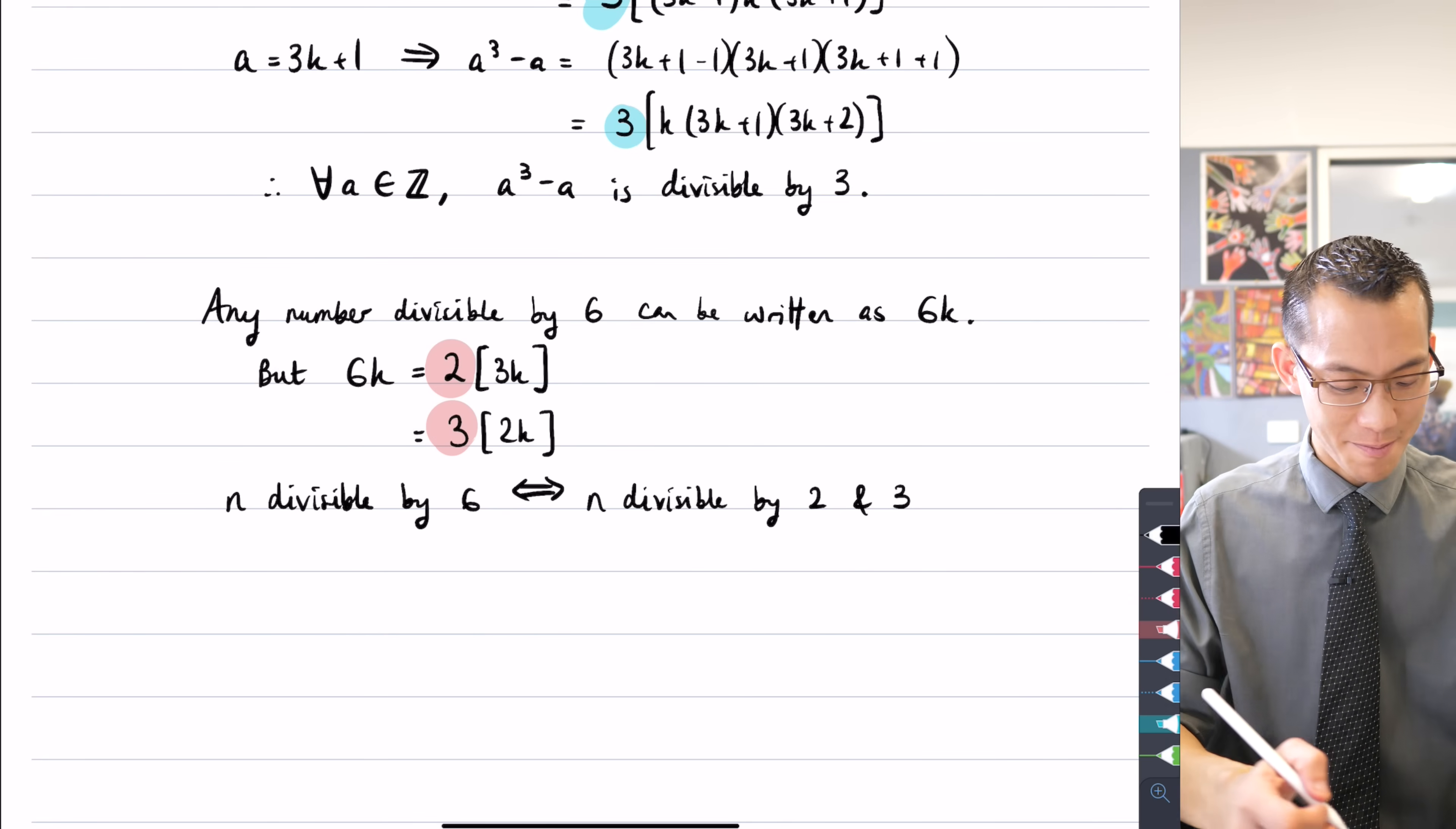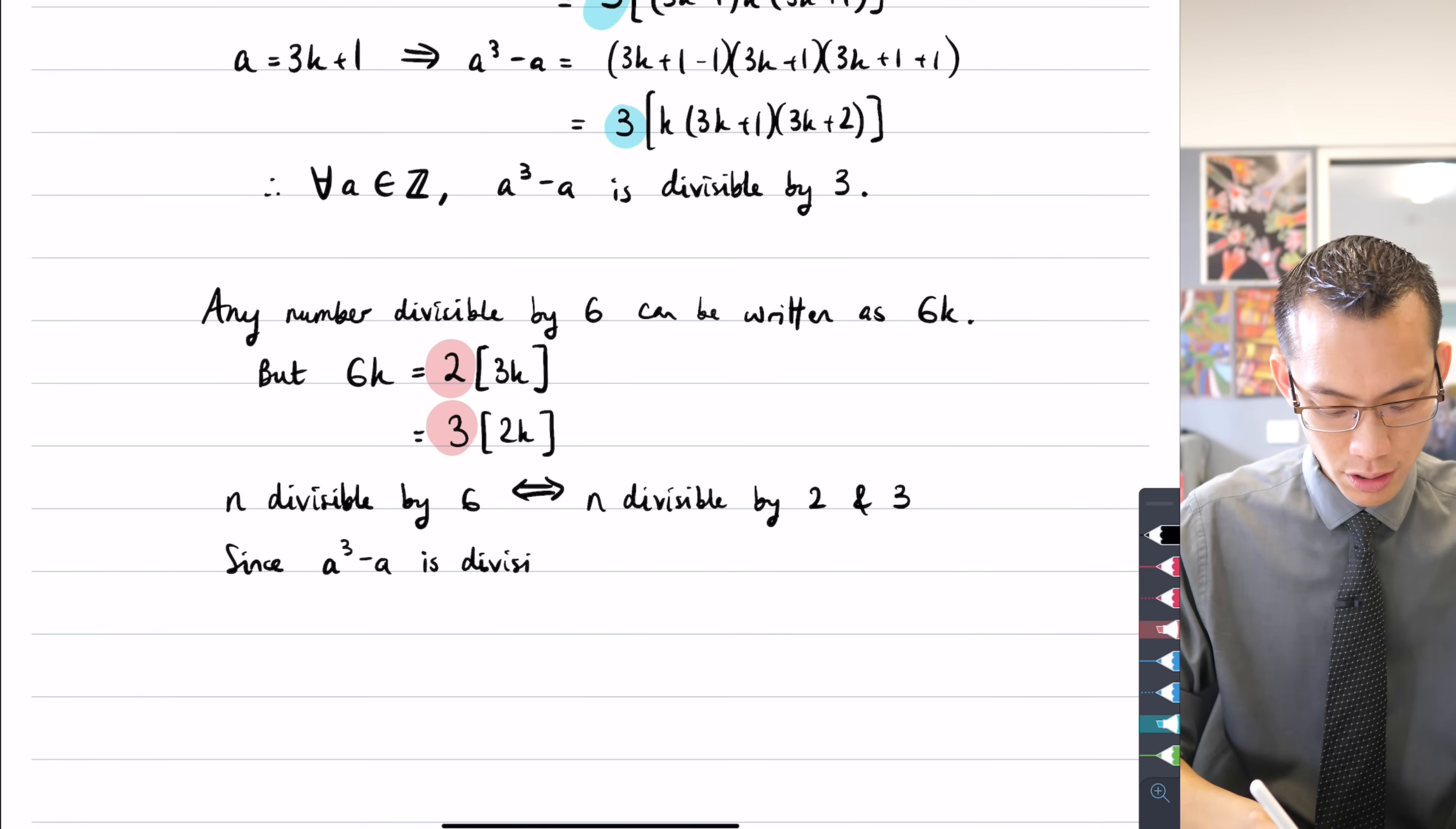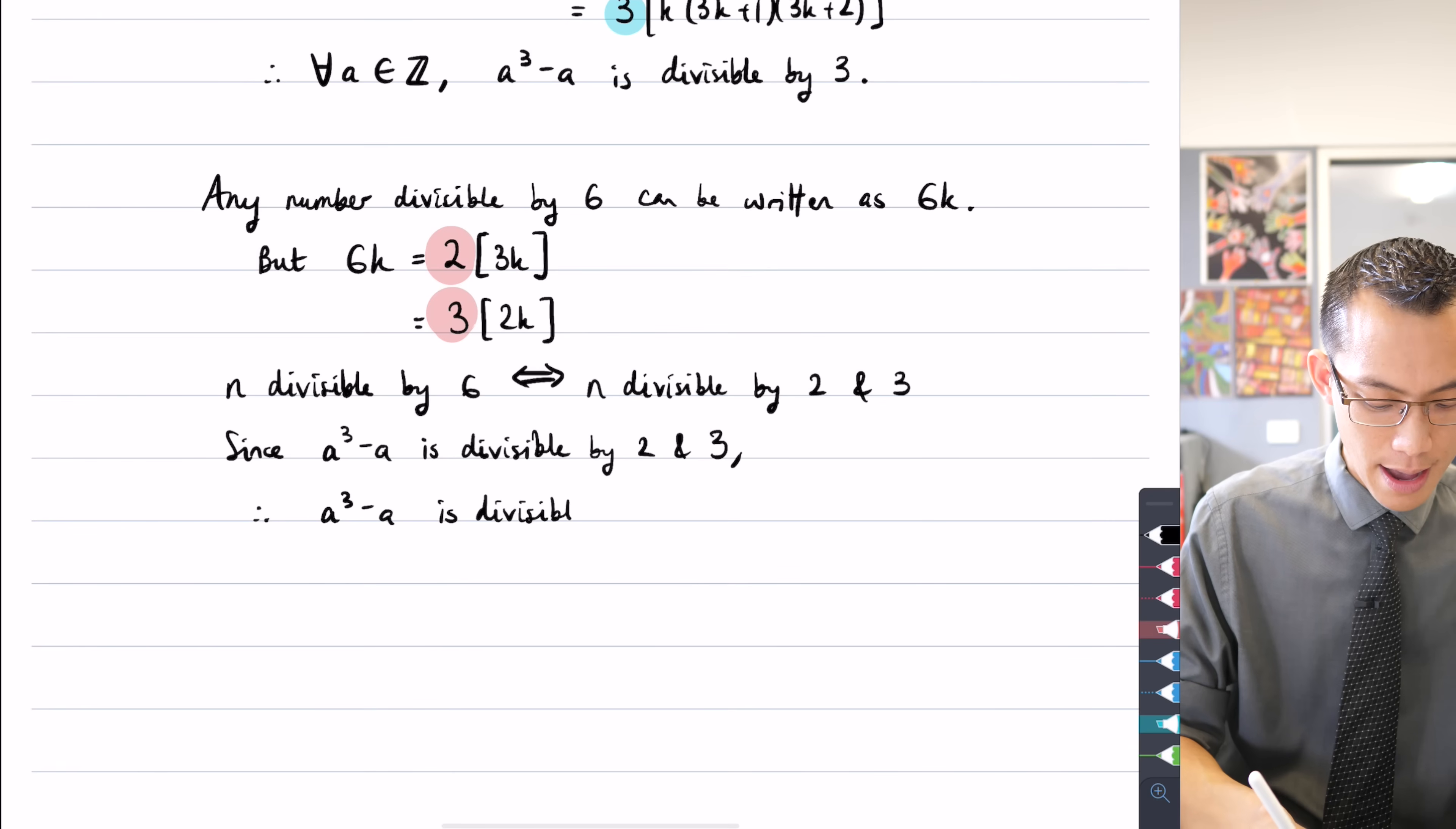So this is it. I can say since a³ - a is divisible by two and three, which I've proven above by exhaustion. What that means is it has to be, therefore, a³ - a has to be divisible by six as well, as required.